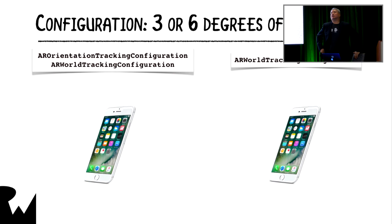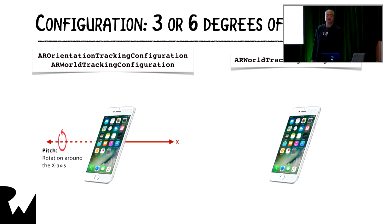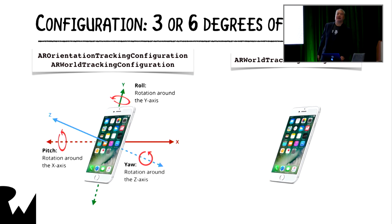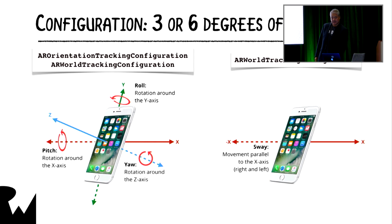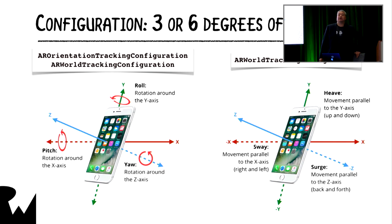Three degrees of freedom covers just the angles — pitch, roll, and yaw, which are rotation around the X, Y, and Z axes. But there's also movement along each axis: sway, heave, and surge. We're going to be writing apps that use six degrees of freedom because we are concerned not only with where the device is but which way it's pointing.